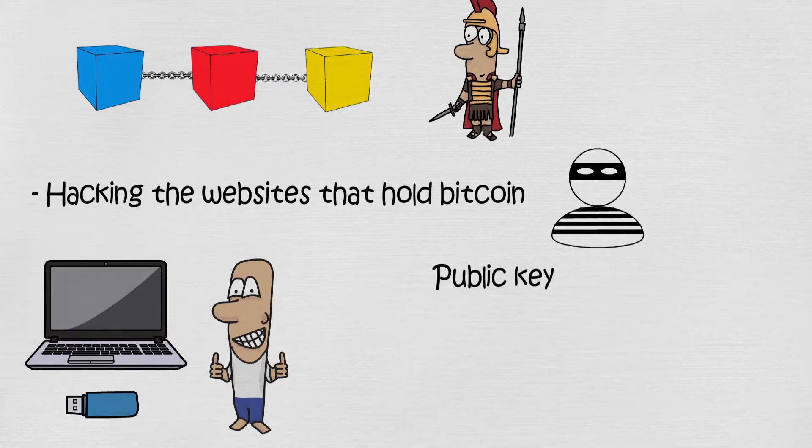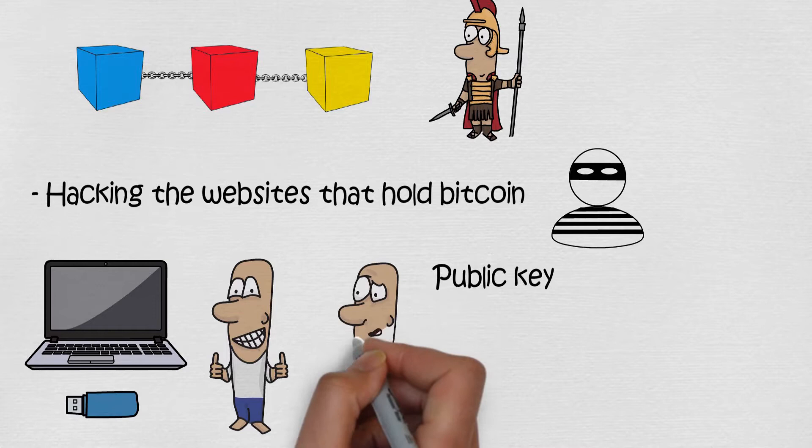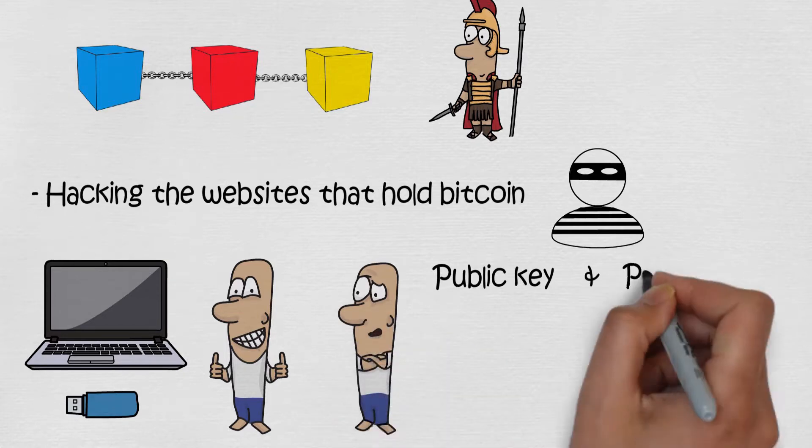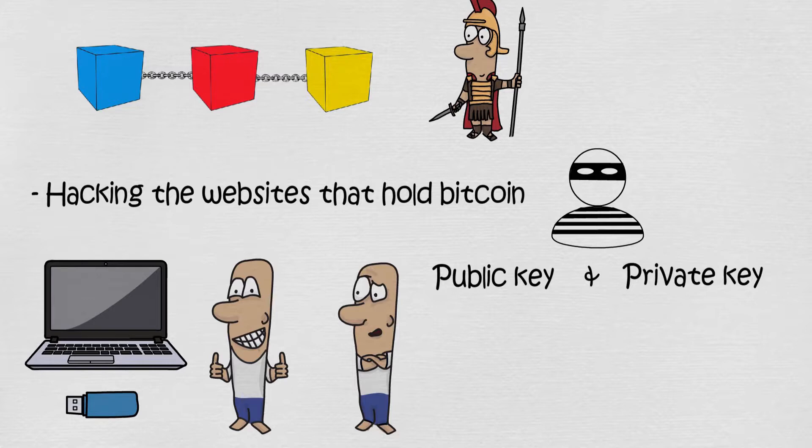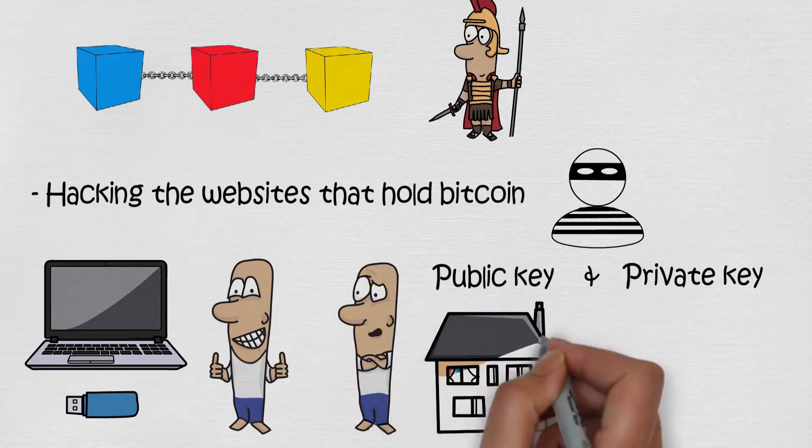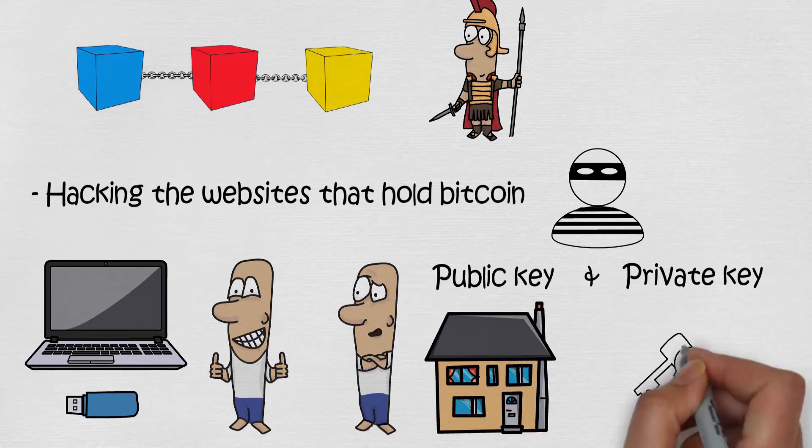But what about that public key that everybody is able to see? Can't they use it to hack your cryptocurrencies? No, they can't. Everybody also has a private key which works like a password. Think about your house for example. A house is your public key that people can see, but they need a key to get in.